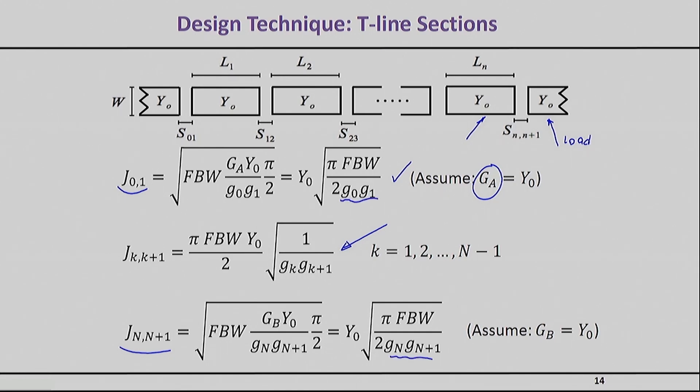Now I have all the equations ready. Once I know my g's, which I will know because I know what filter I'm trying to design, I can immediately calculate j's. That brings us to the last step, which is linking these j's to these gaps. Remember that those j's will be needed to compute the gaps between the resonators.